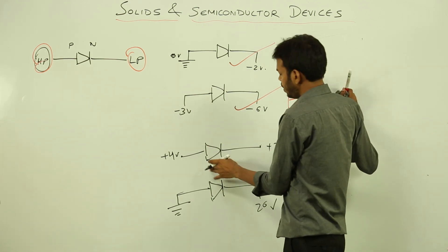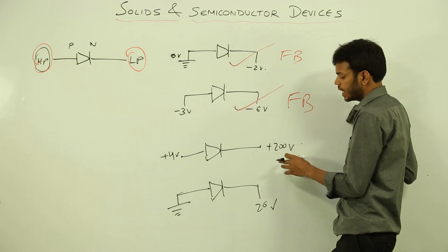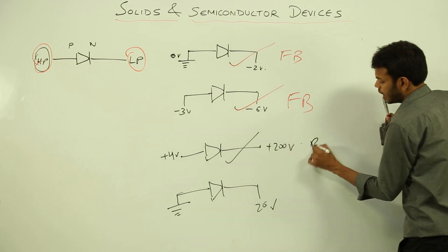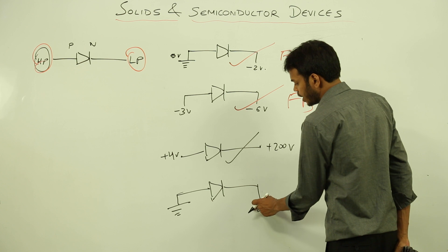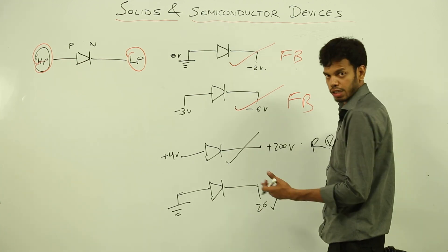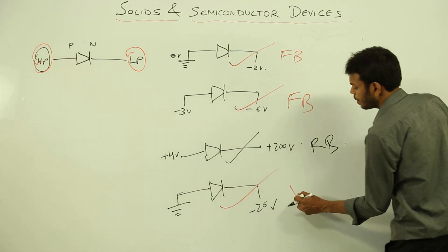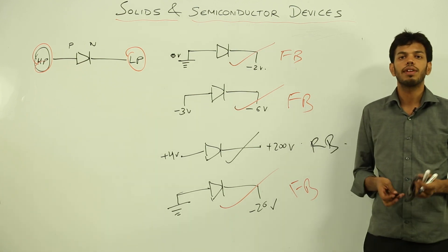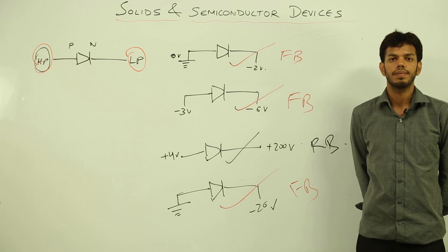Example 3: plus 4 V on P side and plus 200 V on N side — N is at higher potential, so this is a reverse biased state. Example 4: P side at 0 V and N side at 20 V — N part is at higher potential, so this is also reverse biased. But if it were minus 20 V on the N side, that would be lower than 0 V, and then it would become forward biased. This is how you determine the biasing of a diode.